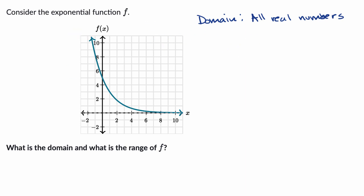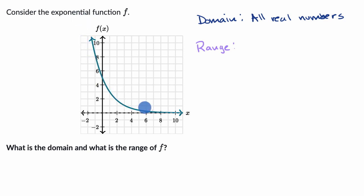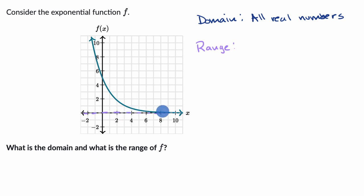Now let's think about the range. The range is the set of all values that our function can take on. When we look at this, it looks like if our x values get more and more negative, the value of our function just goes up towards infinity — it can take on arbitrarily large values. But as we move in the positive x direction, our function value gets lower and lower and lower, and it looks like it approaches zero but never quite gets to zero. That dotted line over here represents an asymptote — as x gets larger and larger, the value of our function gets closer and closer to y equals zero, but never quite gets there.